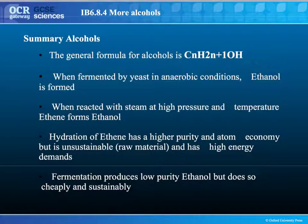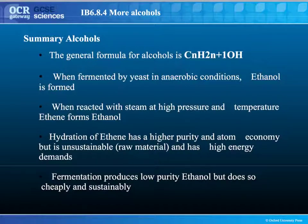In summary, the general formula for alcohols is CₙH₂ₙ₊₁OH. You can make ethanol by fermentation — using yeast in anaerobic conditions — or by hydrating ethene at high temperature and high pressure. Hydration of ethene gives very high purity and high atom economy, but it's unsustainable and has high energy demands. Fermentation has low energy demands and is sustainable, but gives low purity and low atom economy, though production is cheap. Thank you very much for watching. If you have any questions, please see Mr. Klee or any of your science teachers.